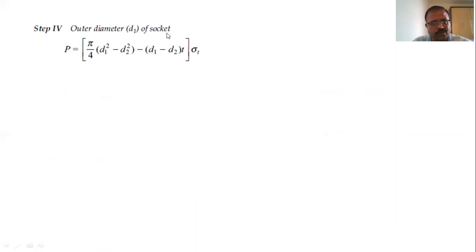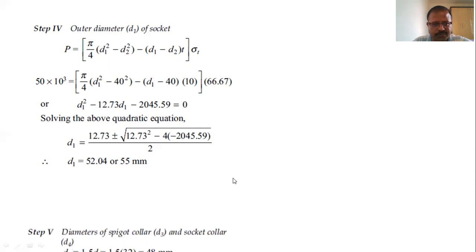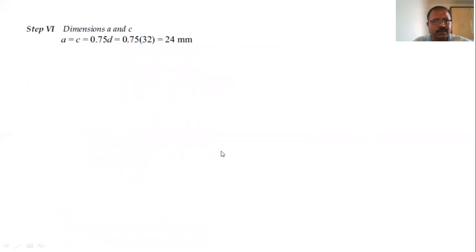Fourth, outer diameter of socket d1: using the tensile failure equation and putting all known values gives another quadratic equation; solving it gives d1 = 52.04 mm, rounded to 55 mm. Fifth, calculate spigot collar and socket collar diameters using empirical relations: d3 = 1.5d and d4 = 2.4d. Then calculate distances a and c using their empirical relations — 'a' is the distance of spigot end from the slot, 'c' is the distance of socket collar from the slot.